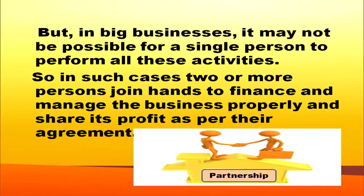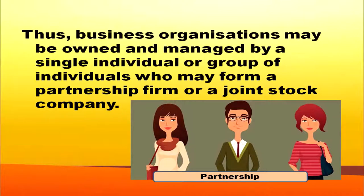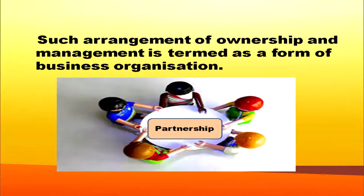In big business, it may not be possible for a single person to perform all these activities. In such cases, two or more persons join hands, bring their money, and manage the business properly. After managing the business, they share the profit as per the agreement. Thus, business organization may be owned and managed by a single individual or group of individuals. If formed by a group, it can be in the form of partnership or joint stock company. Such arrangement of ownership and management is termed as forms of business organization.